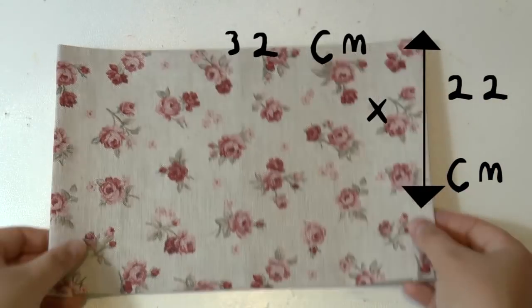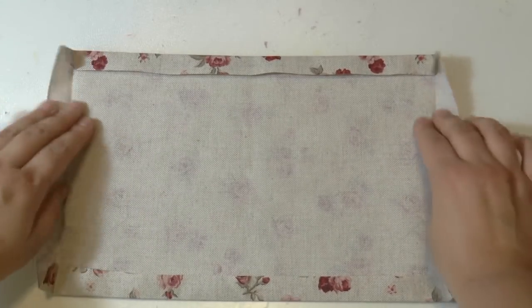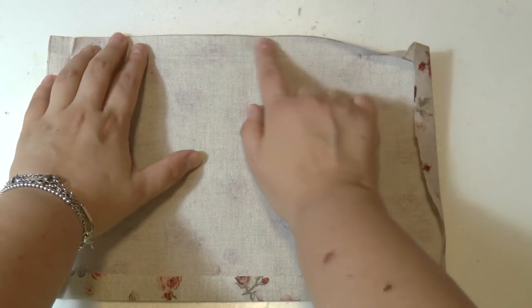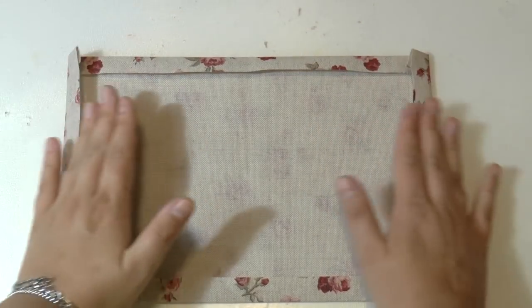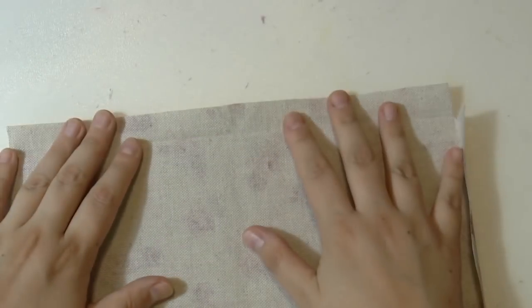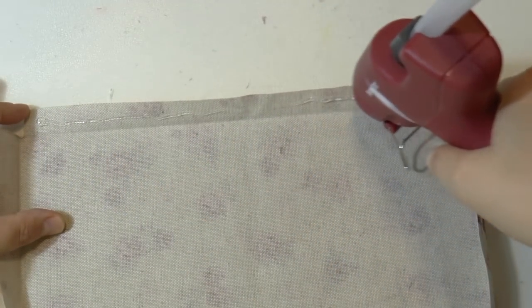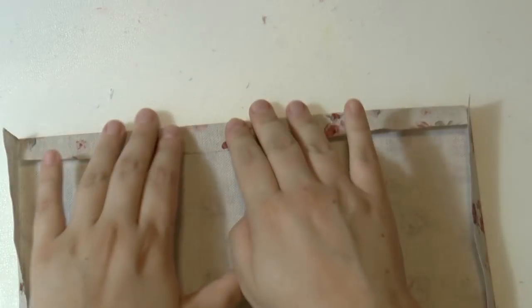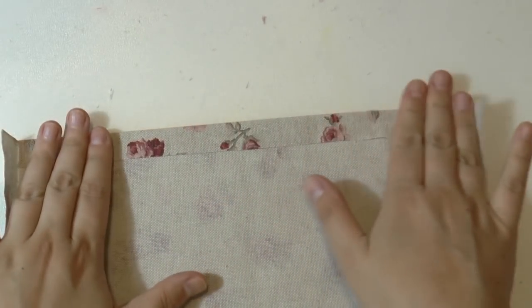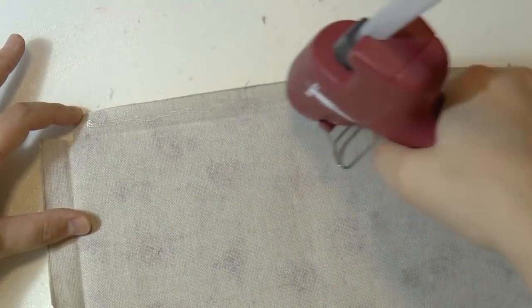So again you want to take a piece of fabric and the measurements are always the same. And I suggest you to fold the edges using an iron. So now we just take some hot glue and glue all the edges like so. It's really easy, really practical and really quick also. Of course if you want to, you can sew this.